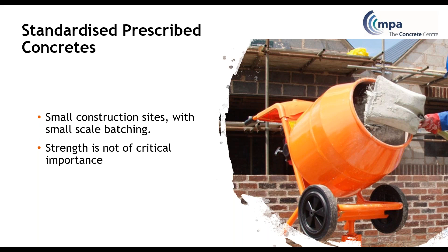Standardized prescribed concrete is at the other end of the scale — it's intended for small construction sites and small-scale batching. It's contained within BS8500 Part 2, and it gives the mix for various designations such as ST1, ST2, and ST3. You cannot specify strength for them, although there is an indication of strength that can be assumed. If you're looking at embodied carbon, these will almost certainly have a much higher embodied carbon than designated or designed concrete.